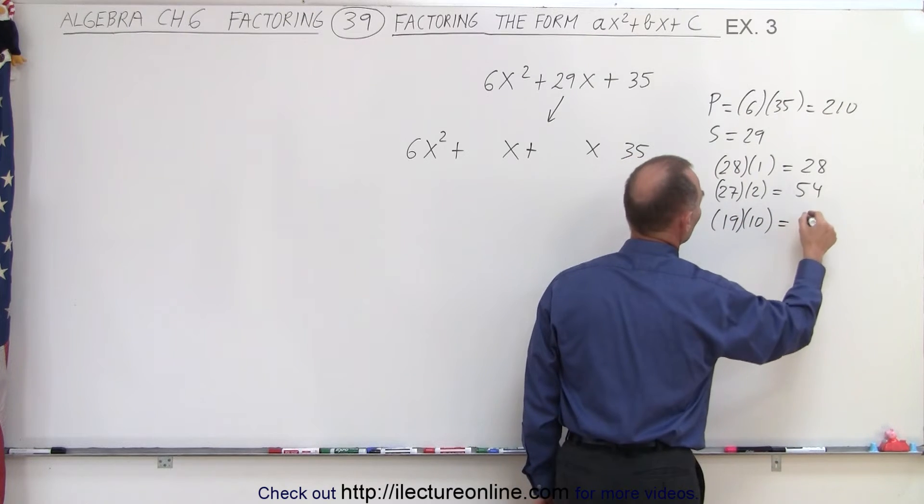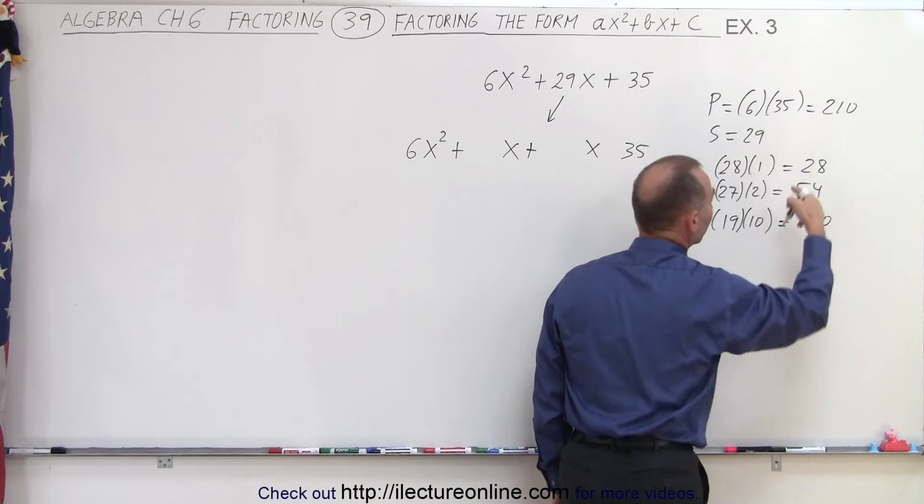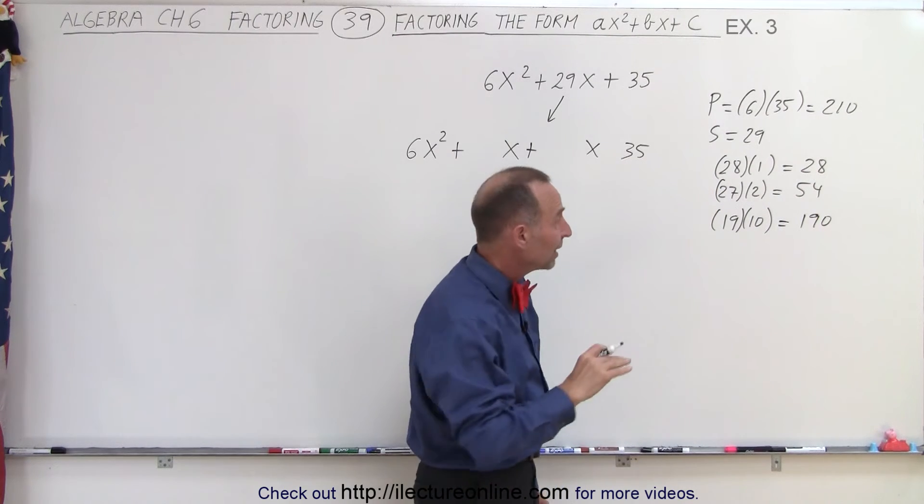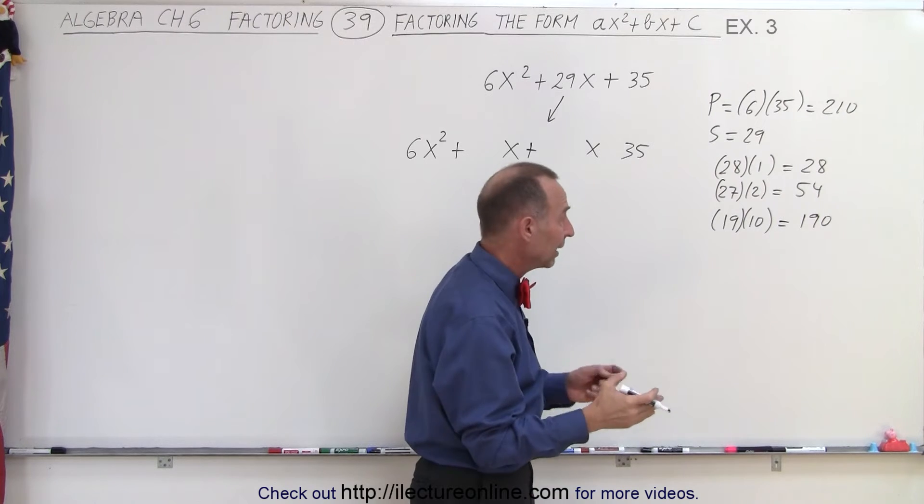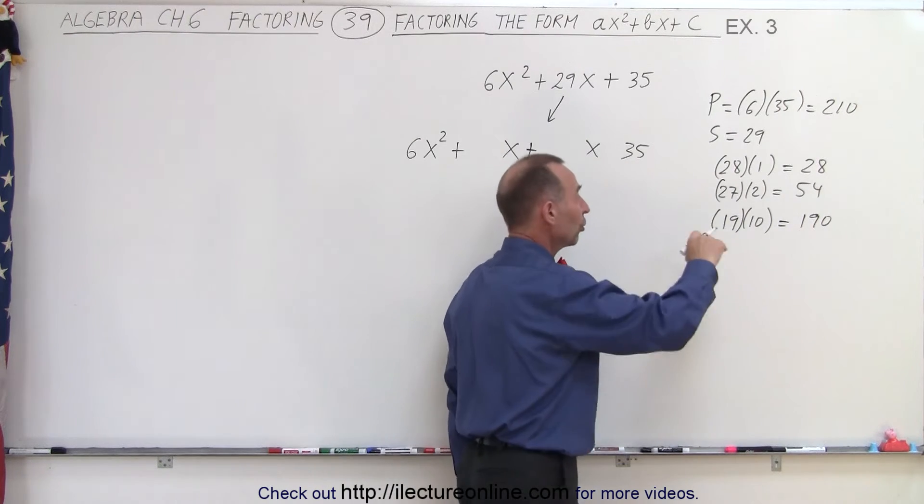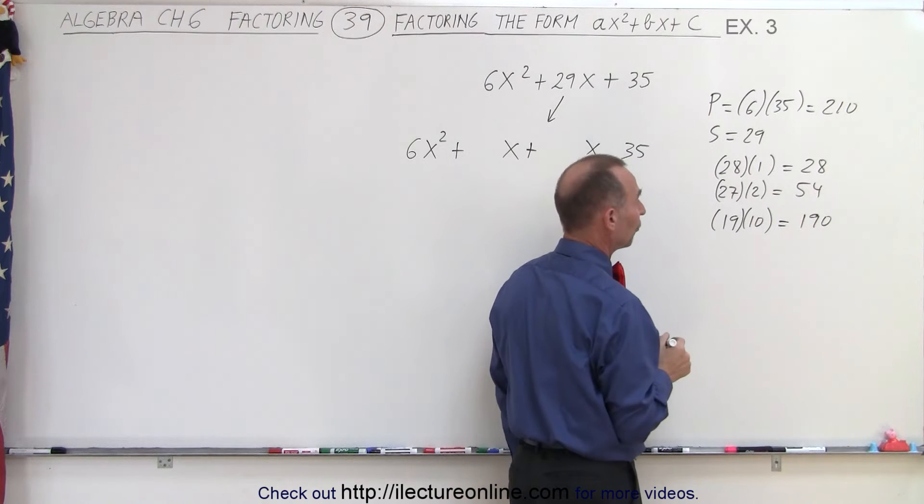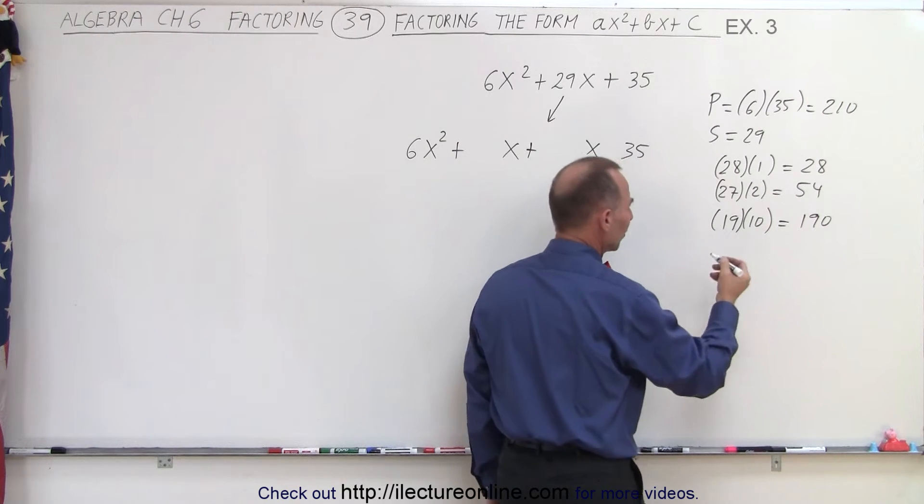19 and 10 multiply to give 190, which means we're getting close. But it could also mean we already passed the correct number. The products get smaller as we continue this process, so we might need to go back to 18 and 11. But let's continue and see what we get.